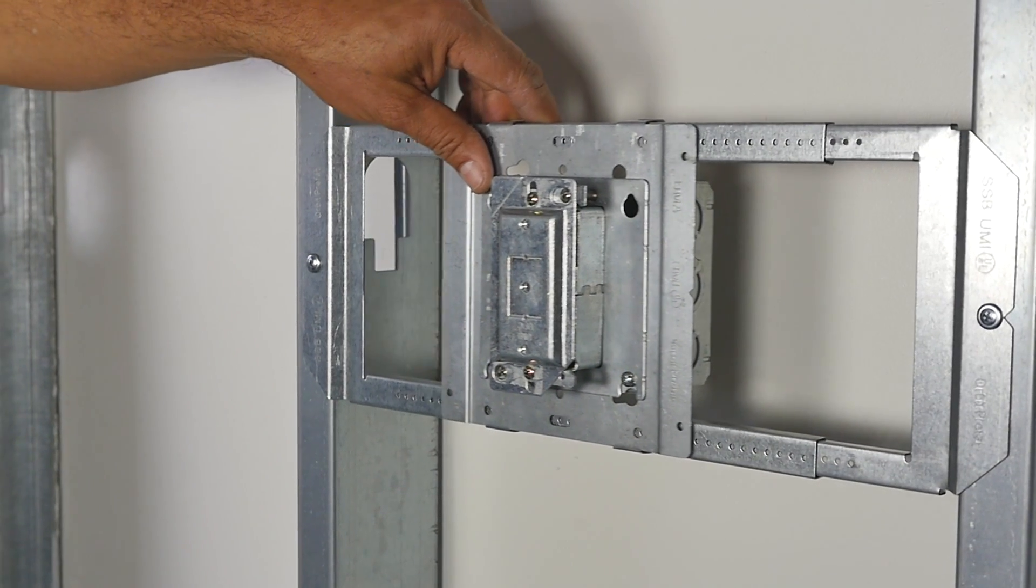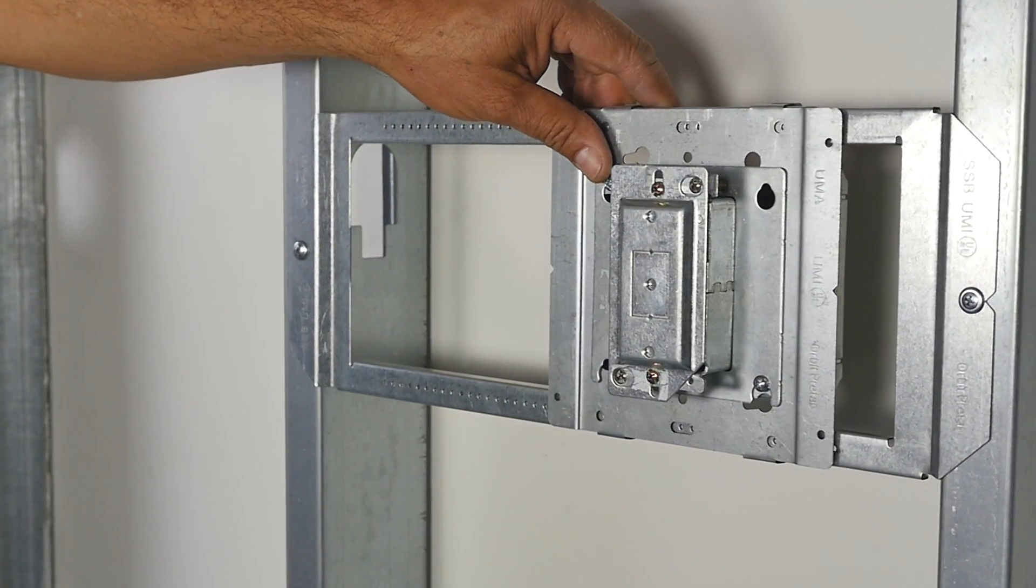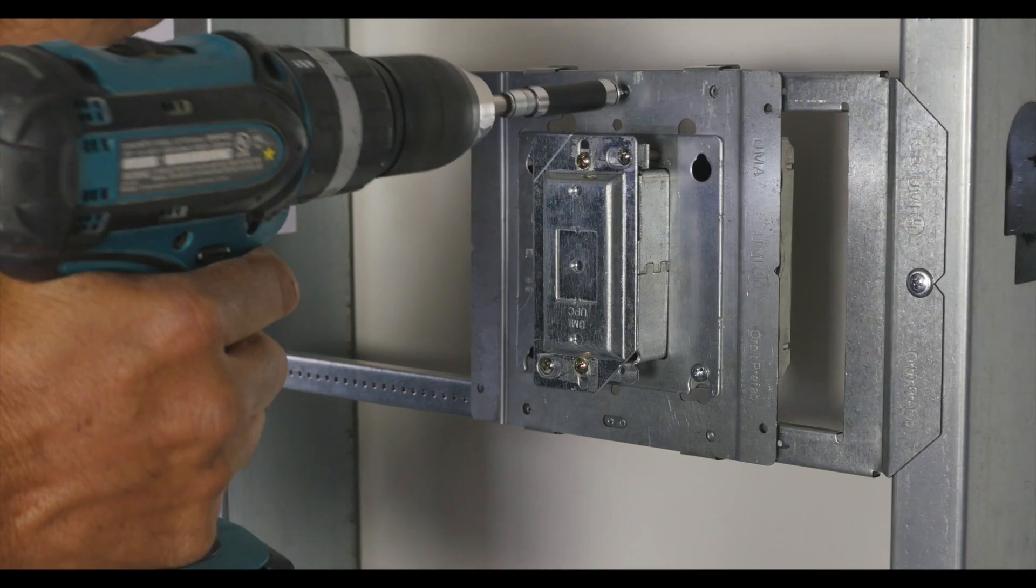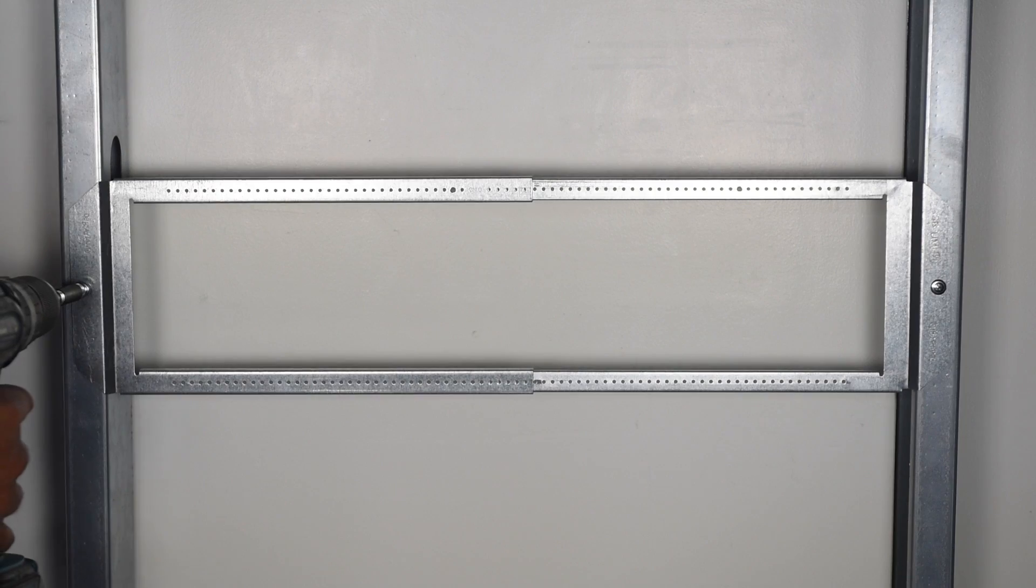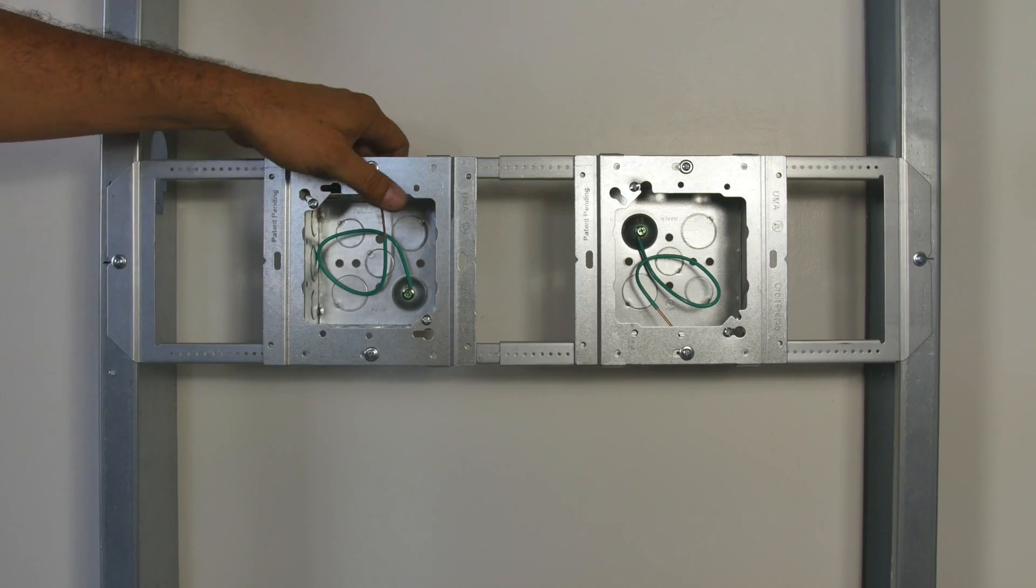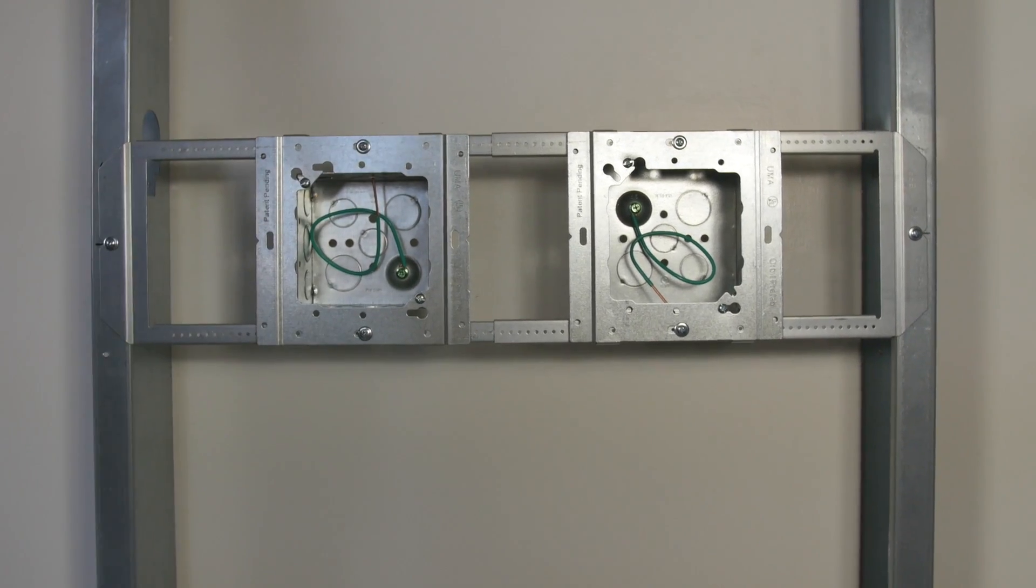After installing the SSB, the box can be easily adjusted along the bracket and secured with tech screws. The SSB eliminates the need for far side back support as the bracket maintains its rigidity when fully extended.